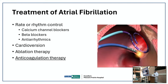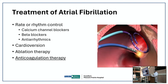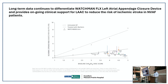In AF ablation, the electrophysiologist goes in and isolates the electrical circuits causing atrial fibrillation. Success rate is about 70-80%, closer to 80%; a second ablation brings it above 90%. Medications like beta blockers, calcium channel blockers, and antiarrhythmics are also available, but have tolerability limits. Based on risk score, patients will be on anticoagulation therapy as well.